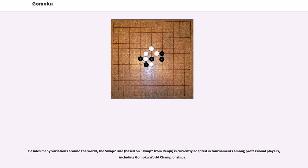Besides many variations around the world, the Swap 2 rule, based on Swap from Renju, is currently adapted in tournaments among professional players, including Gomoku World Championships.